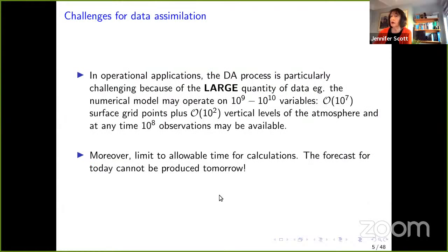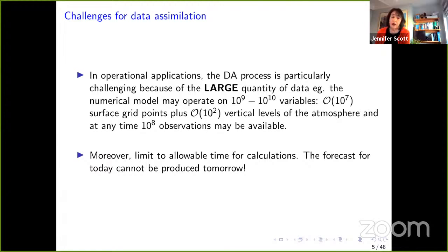In numerical weather prediction this is particularly challenging because of the amount of data involved. The numerical model may operate on 10⁹ or 10¹⁰ variables. You've got approximately 10⁷ surface grid points from around the world, plus two vertical levels of the atmosphere. At any time you might have 10⁸ observations available. It's only useful if we can produce a forecast in a timely manner — expensive computations that delay the forecast make it useless.